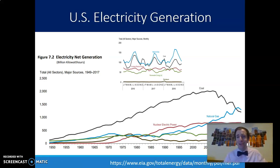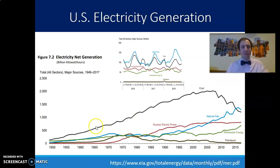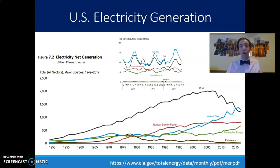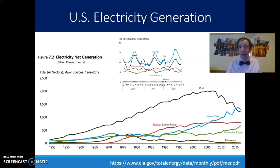If we look at energy generation over time — where electricity comes from — you can see certain patterns. For a long time coal was rising and was primarily where our electricity came from. Most of the power plants in Minnesota were actually coal. But over time, more recently in the 2000s, coal has been overtaken by natural gas. In the Twin Cities area, most of our energy that used to come from coal power plants has been converted to natural gas power plants — it's the same facility, they just use a different fuel.